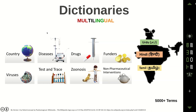The dictionaries we've worked with can be on any set of topics. Typical things to look for in the literature we've dealt with are countries, diseases, drugs, research funders, and for diseases specifically: pathogens, mechanisms to trace them, mechanisms of transmission, and interventions to pandemics. All of this can happen multilingually, and we often work with on the order of hundreds to thousands of terms.